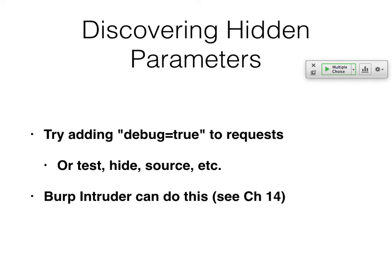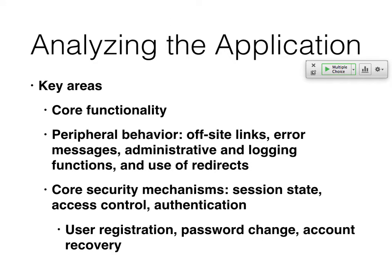There can be hidden parameters. You can try adding debug=true in the hopes that somebody has a debug version — that's a good one. A verb intruder can do that automatically. When you're hunting around the app, try to see what it does. Find the core functionality — if it's a banking app, figure out how to view your balance and move money. Look for things that go off to other sites that might still have authenticated content. Error messages are very handy; people often have error messages that tell you things you really shouldn't know. Look at session control, access control — how do you really have to authenticate before you get to the management page? How do they maintain a session? What does the token look like? Anything to do with that is a high-value item.